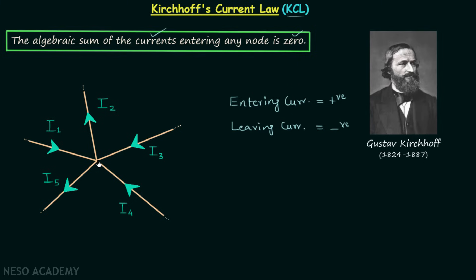In this example we have a node where five currents are meeting. Current I1 is an entering current, I2 is a leaving current, I3 is an entering current, I4 is also an entering current, and I5 is a leaving current. So I2 and I5 are the leaving currents, and I1, I3, and I4 are the entering currents.